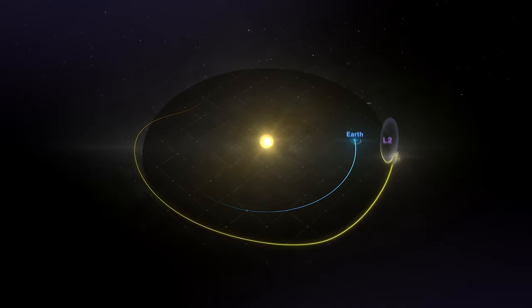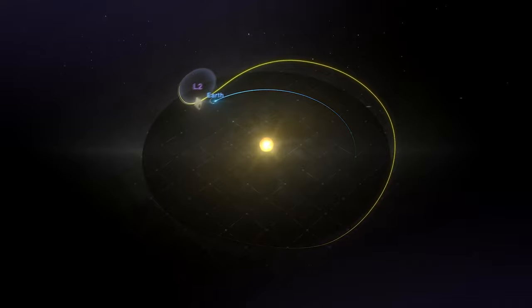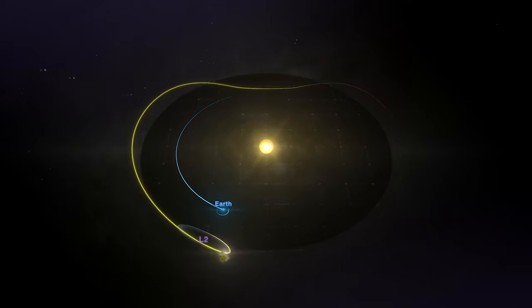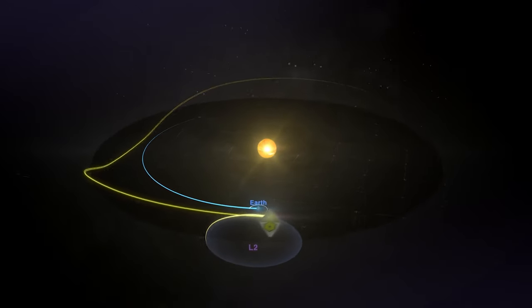This animation shows how this will work. To remain in orbit around L2, Webb will have to periodically burn small amounts of fuel. This puts a time limit on the usefulness of the telescope at around 10 years.